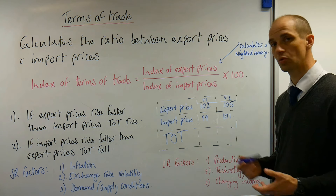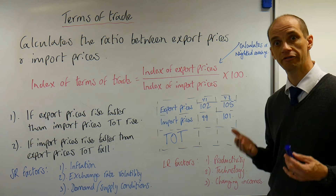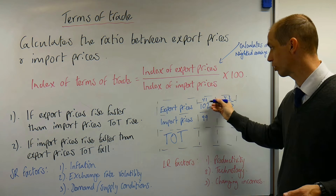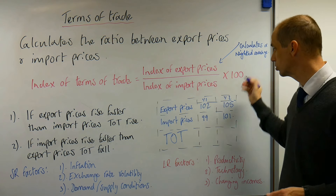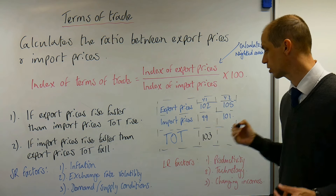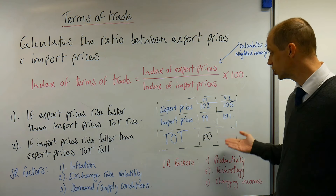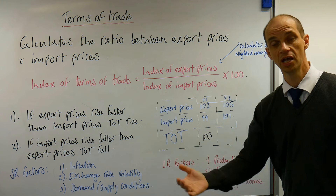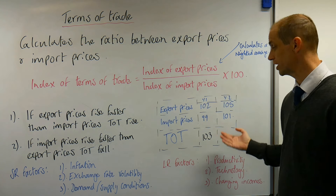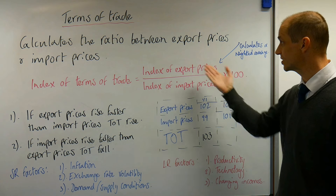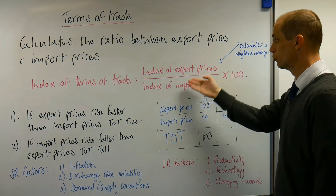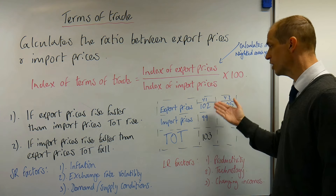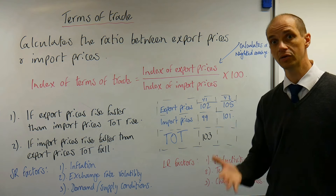Putting those figures through the calculation — 102 divided by 99, multiplied by 100 — gives an outcome of 103. This shows that the terms of trade are improving: fewer exports need to be sent overseas to receive that given quantity of imports.